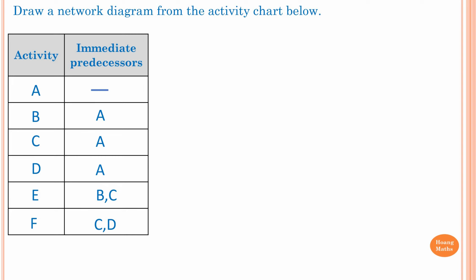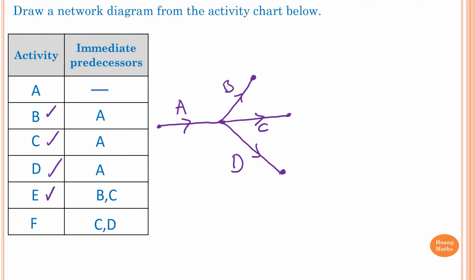We know Activity I has no prerequisites, so I draw I first. Activity B, C, and D all have an immediate predecessor of I — they share the same predecessor. So I draw B, then C, then D branching from I. Activity E requires both B and C to be complete before proceeding. So I start E from Activity B. To connect B and C together for Activity E, I need a Dummy Activity — this is the Dummy Activity — showing that both B and C must be complete before moving to E.